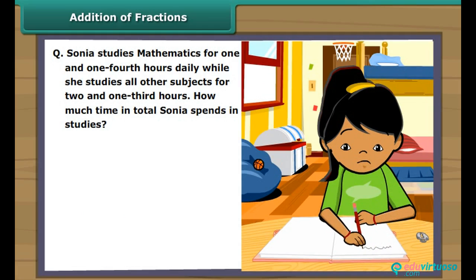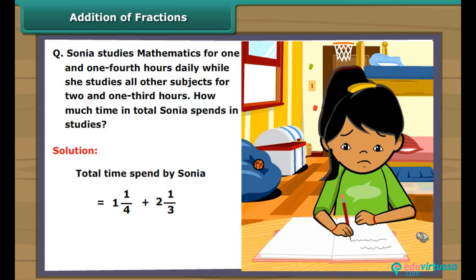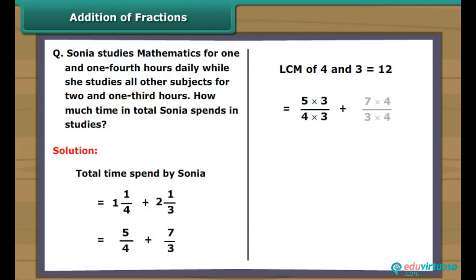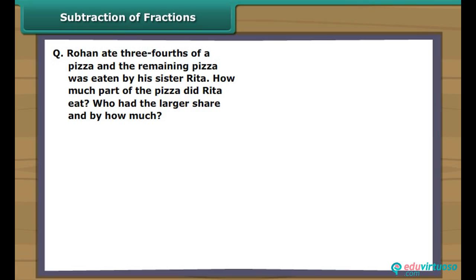Sonia studies mathematics for one and one-fourth hours daily, while she studies all other subjects for two and one-third hours. How much total time does Sonia spend in studies? Total time is equal to one and one-fourth plus two and one-third hours, which equals five-fourths plus seven-thirds. Taking LCM of 4 and 3, which is 12, we get 15 upon 12 plus 28 upon 12, giving 43 upon 12, which simplifies to three and seven-twelfths.